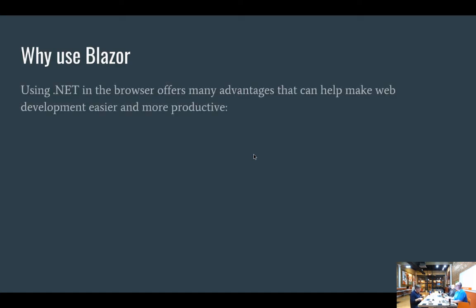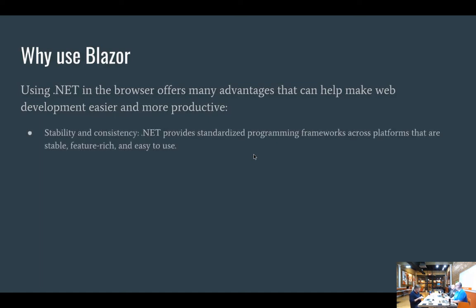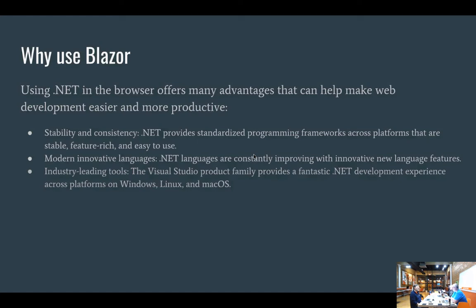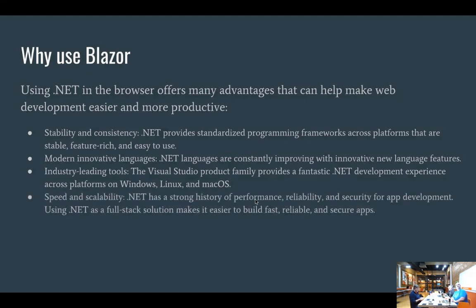Why use Blazor? You get stability and consistency — you're used to these standardized frameworks from Microsoft. Modern, innovative languages that are constantly evolving. Industry-leading tools — you can do this in Visual Studio with the development experience you're accustomed to, across all different platforms. Speed and scalability — .NET performance is reliable and secure. When you use .NET as the full stack, it gets easier to be more reliable, more secure, and faster.